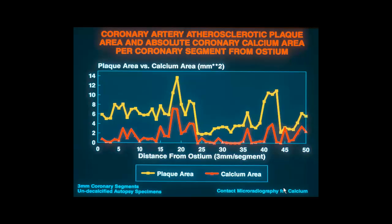Using the same research, this shows an example of a distinct relationship between each individual 3-millimeter section, showing in yellow the plaque area defined by planimetry, as well as the calcium area in the same section defined by contact microradiography. You can see that there is an astonishing relationship between plaque area and calcification area. However, there are also some very important lessons to learn. One can have plaque without calcification, but calcification noted in a coronary artery is a definitive definition of coronary atherosclerotic plaque.